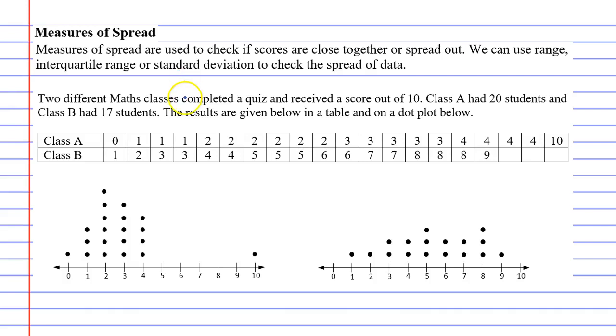If we look at the example below, we've got two classes, class A and class B. They are math classes, and they completed a quiz. This quiz had a score out of 10.